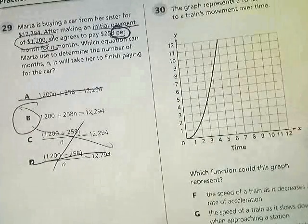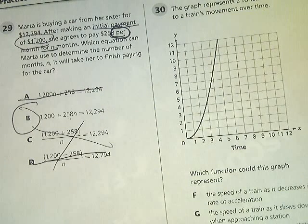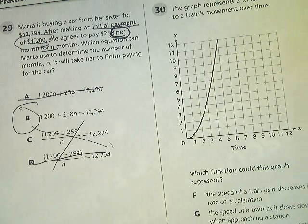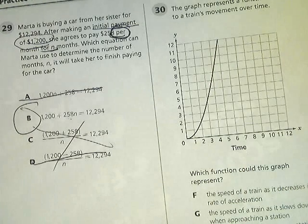But it should be B. So, the answer to number 29 is B. Anything that has a one-time payment and that payment somehow interacts, it's rarely going to be anything other than something that looks like slope-intercept form, which is this one.